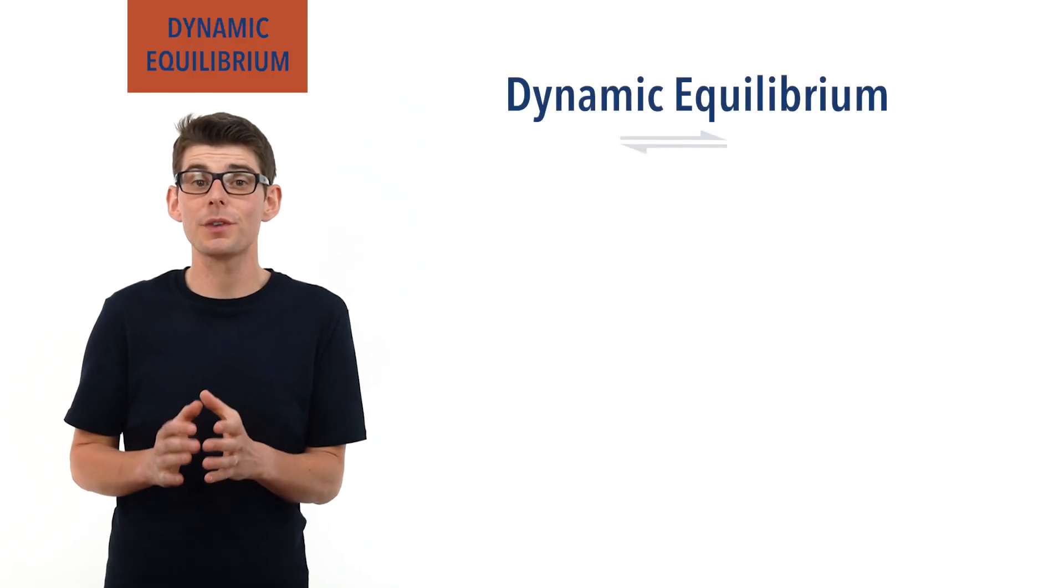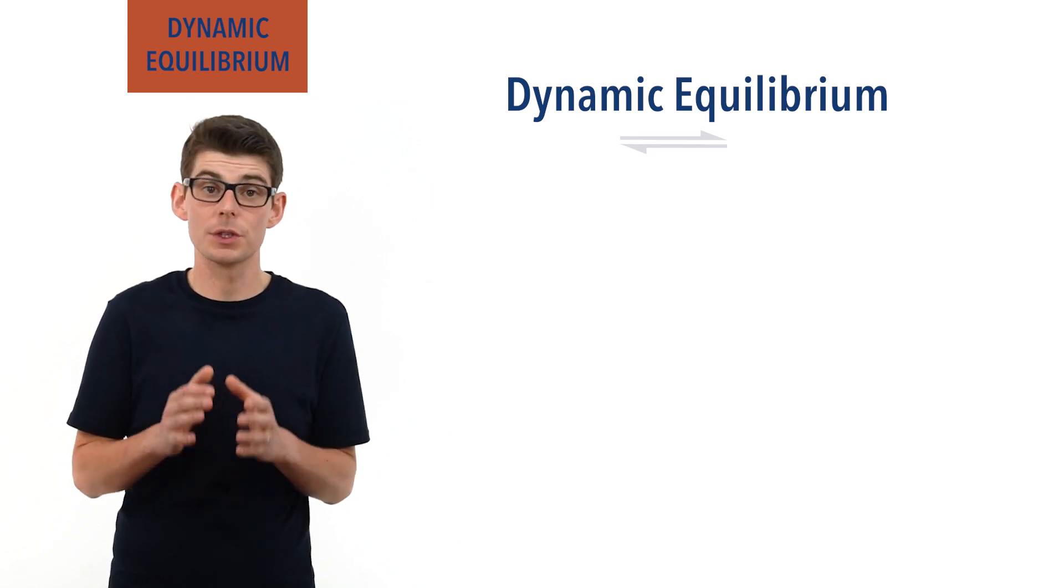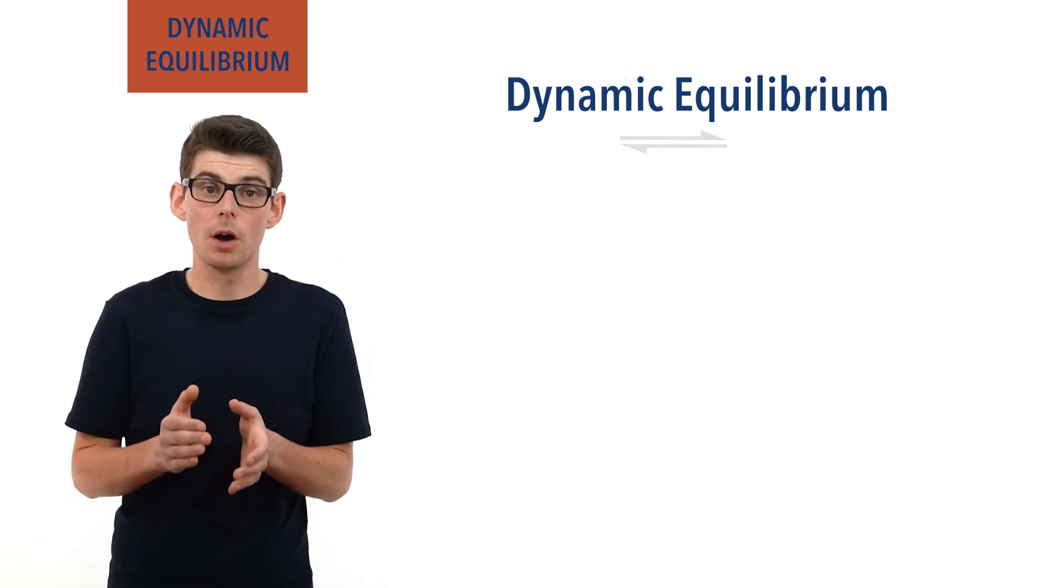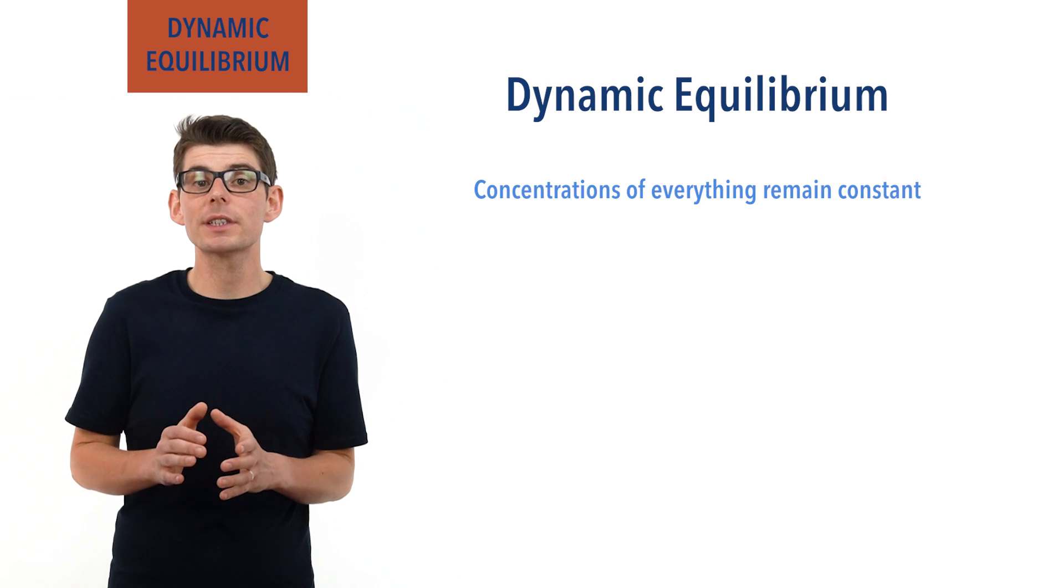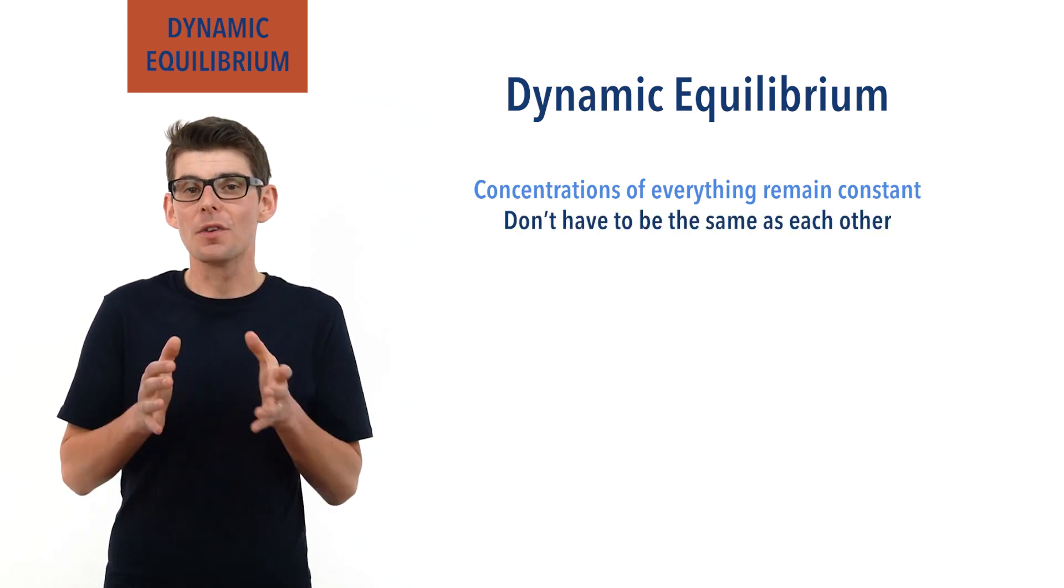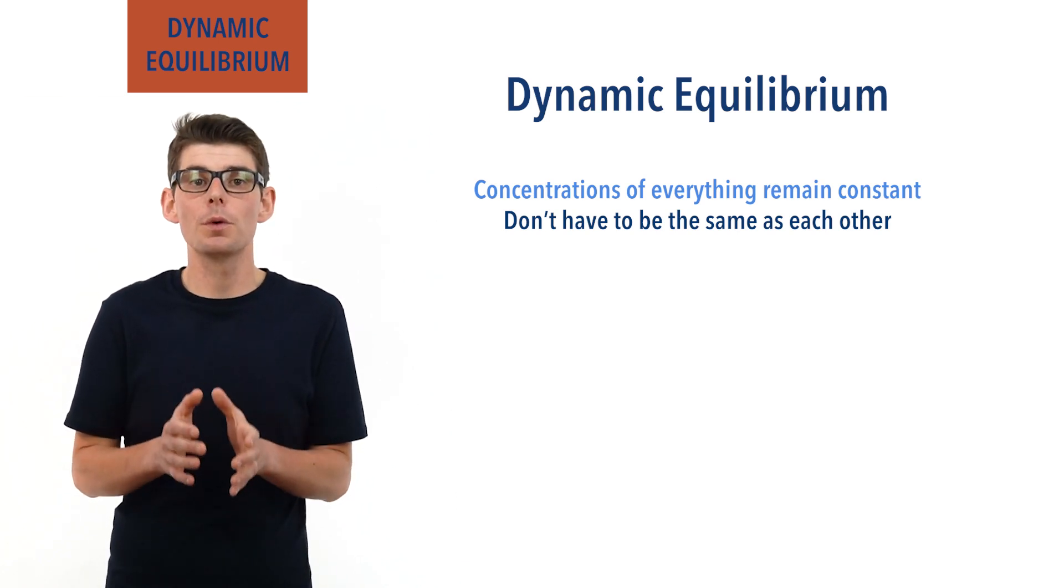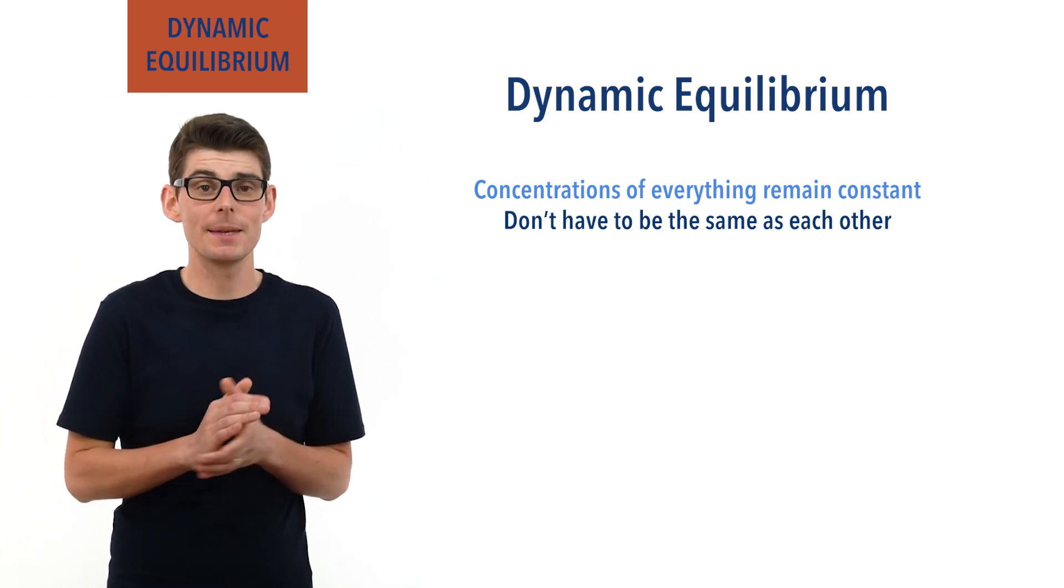The thing that students often find a bit confusing is the fact that although the concentrations of everything at equilibrium are constant, they definitely do not have to be the same as each other. Remember, equilibrium is reached when the rates of forward and reverse reactions become the same.